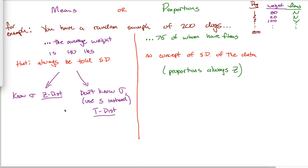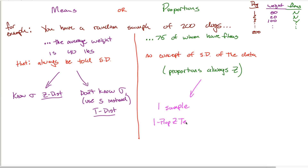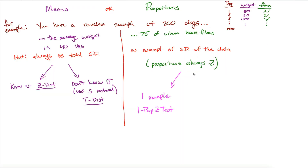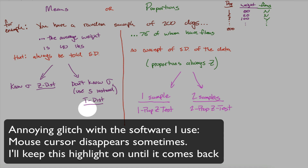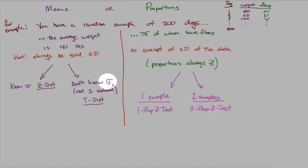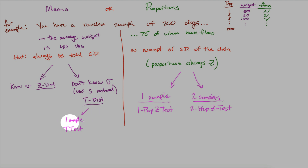Do you have one random sample of 200 dogs or two samples — say 200 dogs and 300 cats? For proportions: if there's one sample, use the one prop z test; if two samples, use the two prop z test. For means with a t distribution — say a random sample of 200 dogs where the average age is 7 years and the standard deviation is 3.6 years — if you have one sample, you use a t test.